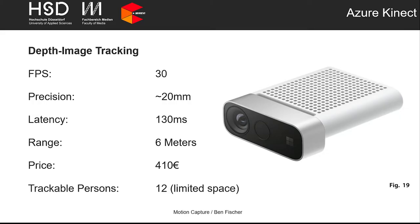The first system is the Azure Kinect, which is basically one sensor unit using a depth image camera to track the body. It's outside-in tracking, but being a single unit it could also be mounted on a robot for inside-out use. There is virtually no setup required — just place the unit in front of a PC, connect it, and tracking works. It runs at up to 30 frames per second with precision up to 10 millimeters, though typically 20–30 mm, a latency of around 130 milliseconds, and a range up to 6 meters.